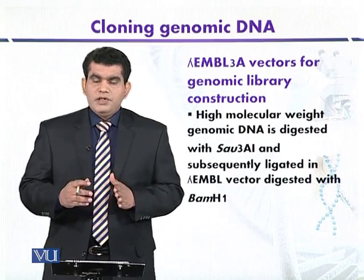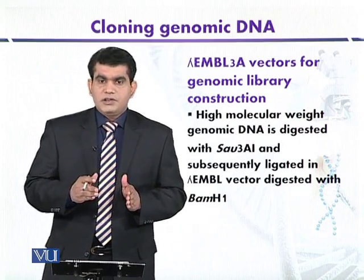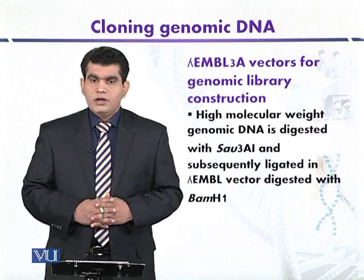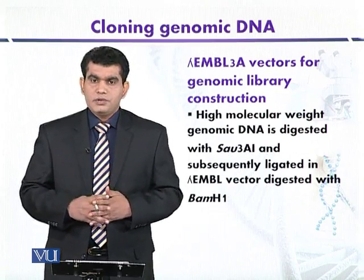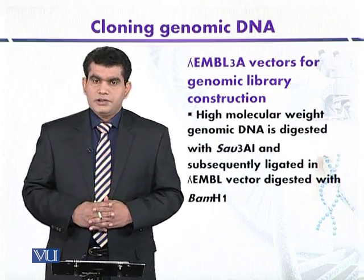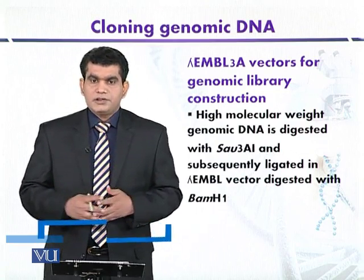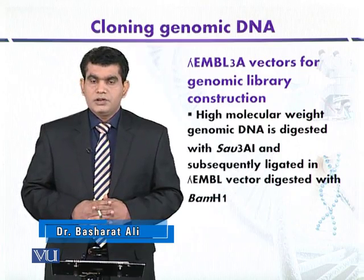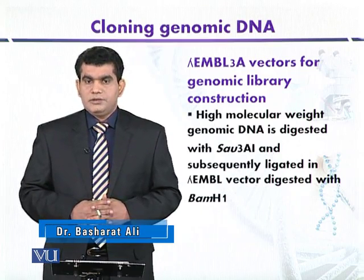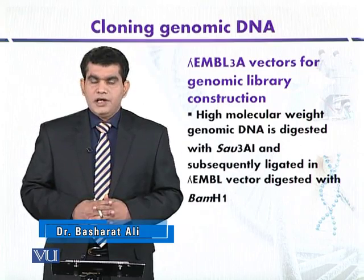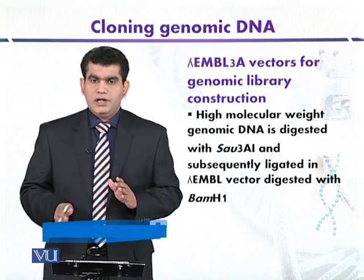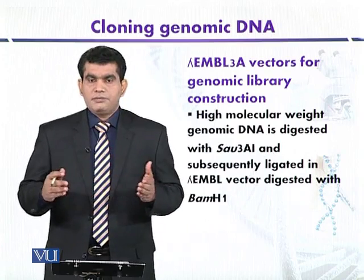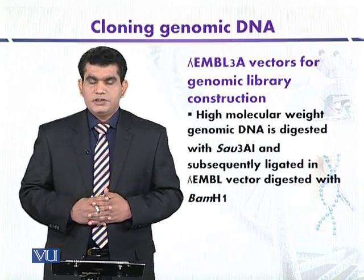If we compare it with the previous strategy of Maniatis, he used two restriction endonucleases to generate DNA fragments with blunt ends. In the Maniatis strategy, enzymes HaeIII or AluI were used, which produce blunt ends and recognize tetranucleotide sequences.